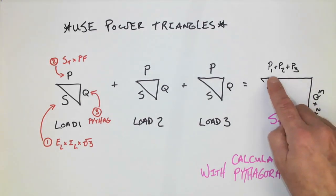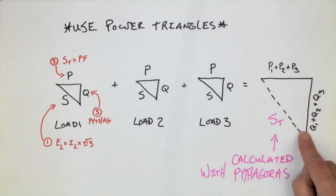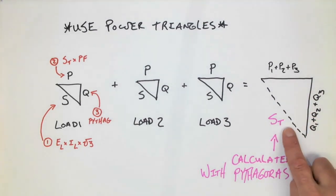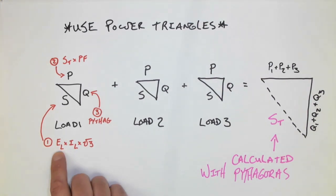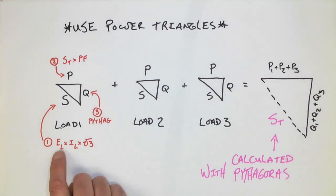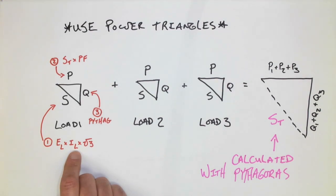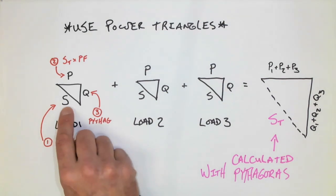After I've added the totals, I will then calculate the total VA for the circuit by using Pythagoras. Most questions will give us a voltage of the source and a current for the load. If I use the voltage line value and current line value times root three, I automatically get the S.